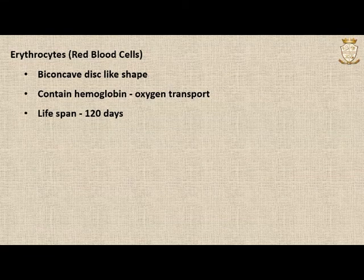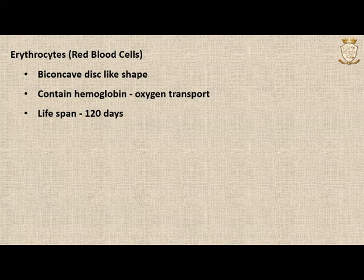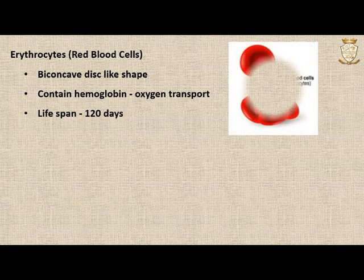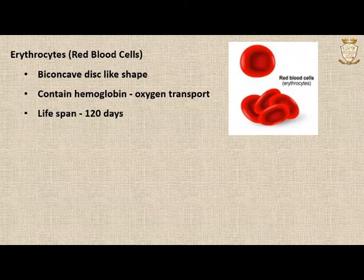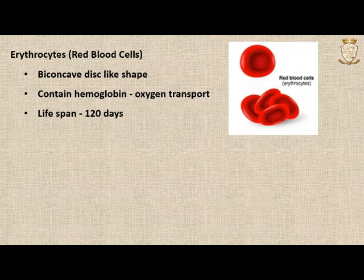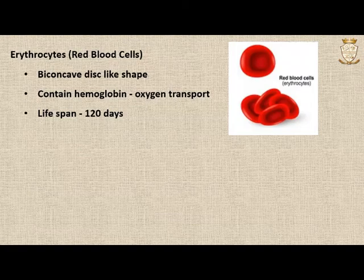Erythrocytes, or red blood cells, have a biconcave disc-like shape and carry hemoglobin, an iron-containing protein. The presence of hemoglobin provides blood its characteristic red color. Hemoglobin helps in oxygen transport. RBCs have a lifespan of about 120 days.